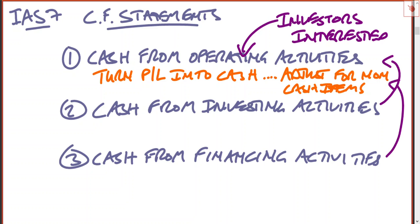In terms of preparing it, it's very easy: start with the profit before tax, look for any non-cash items — depreciation, accruals, amortization, etc. — add back the expenses and take off any non-cash gains. Then adjust for working capital: if inventory has increased, that ties up cash so reduce it; if receivables have increased, that's tying up cash too, so that decreases your cash figure.